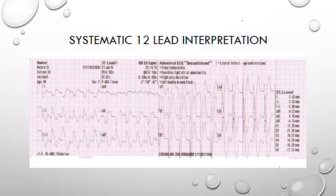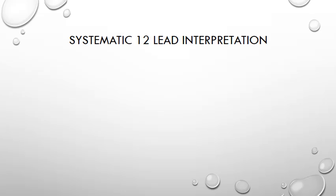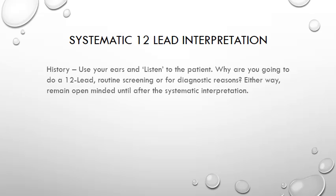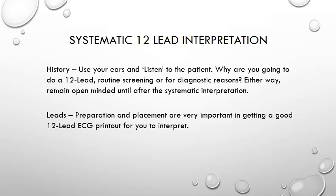Even if you can't make a diagnosis, you will at least be able to describe what is seen on the ECG and document this on your paperwork. How do we avoid the pitfalls of making a snap judgment? The first thing is to use your ears and listen to the patient. Getting a good history is the most important part of recording a 12 Lead ECG. Next, as we covered in our previous video, good preparation and lead placement is the second cornerstone. Now we have listened, prepared and recorded our patient's ECG, we can then use our systematic approach to reading it.